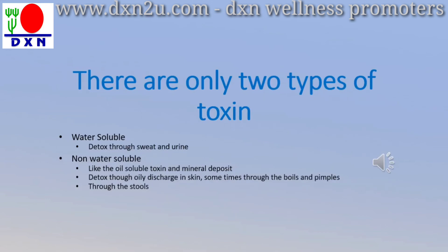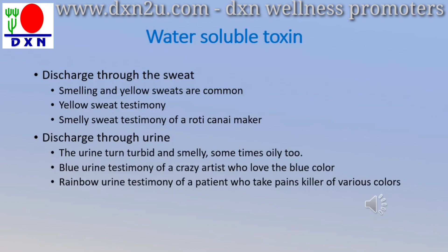When it comes to toxins, there are only two types in the body. One is water-soluble and one is non-water-soluble. Water-soluble toxins are normally discharged through sweat and urine. Non-water-soluble toxins — sometimes they are oil toxins or minerals like calcium deposits — are not soluble in water. They are normally discharged through skin discharges and sometimes through boils and pimples on the skin.